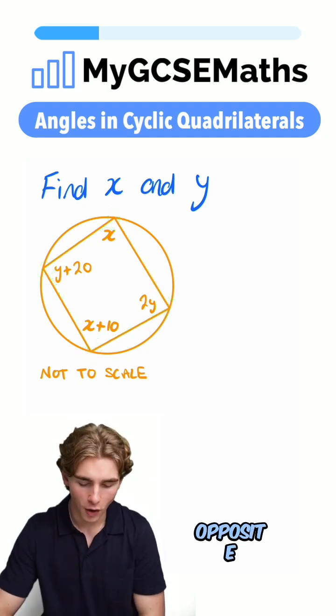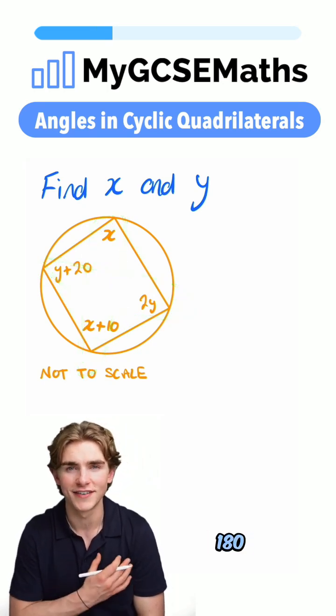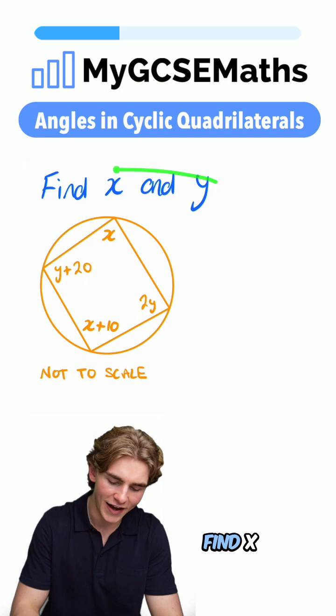What does that mean? It means that the opposite angles in that quadrilateral have to add to make 180 degrees. So how can we find x and y?